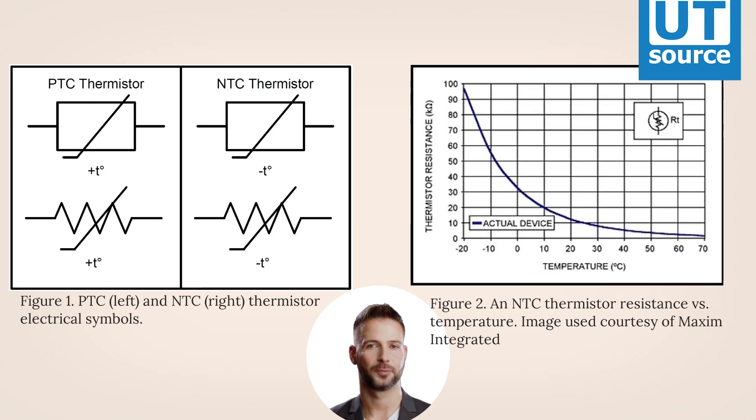The resistance of a PTC thermistor increases as the temperature increases. In contrast, the resistance of an NTC thermistor decreases as temperature increases, and this type seems to be the most commonly used thermistor. See figure 1. It's important to realize that the relationship between a thermistor's resistance and its temperature is very non-linear, as seen in figure 2.